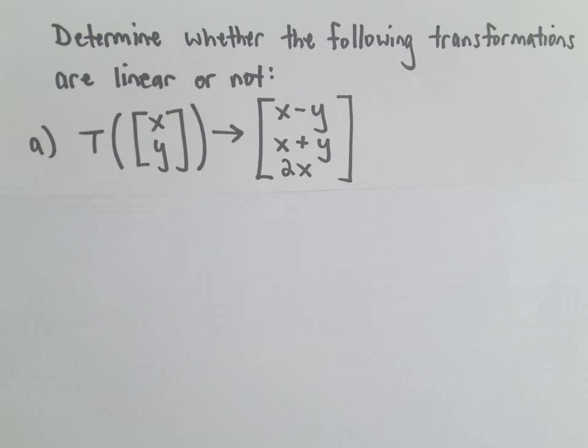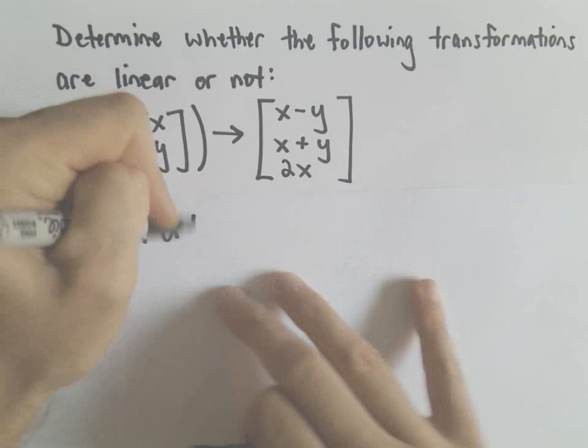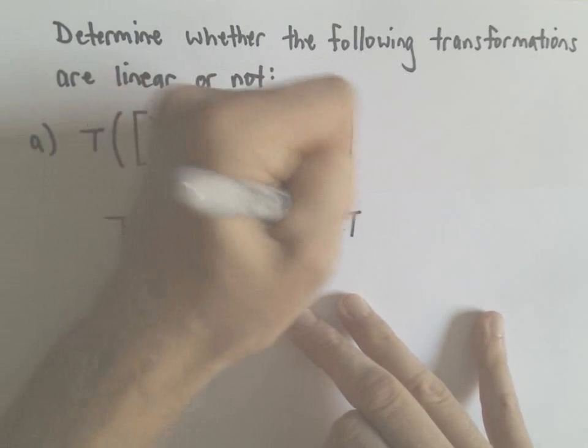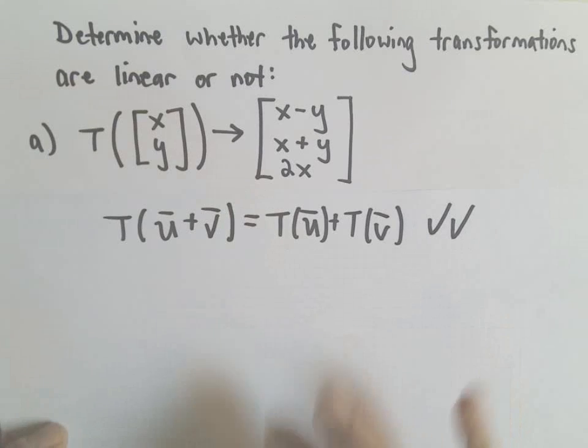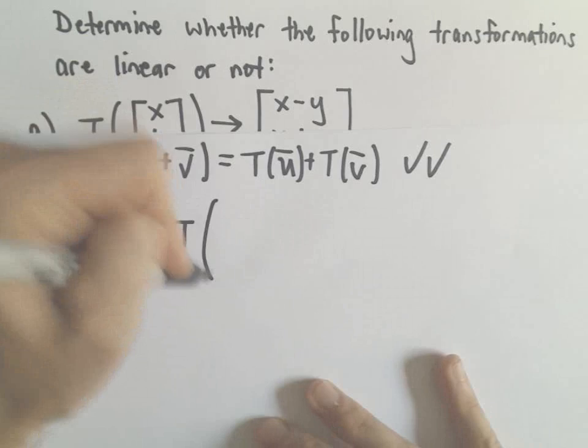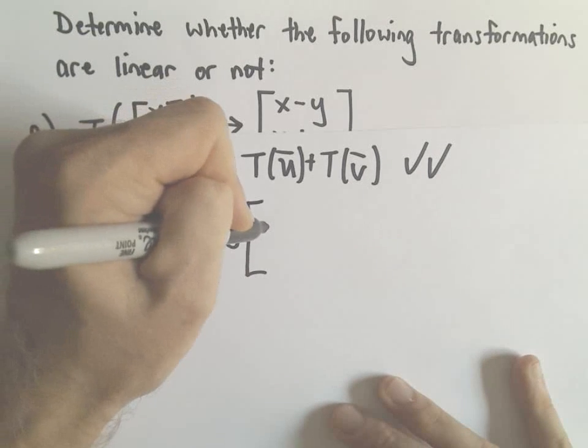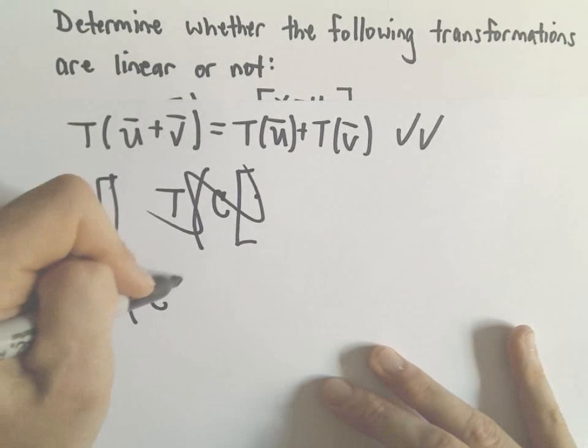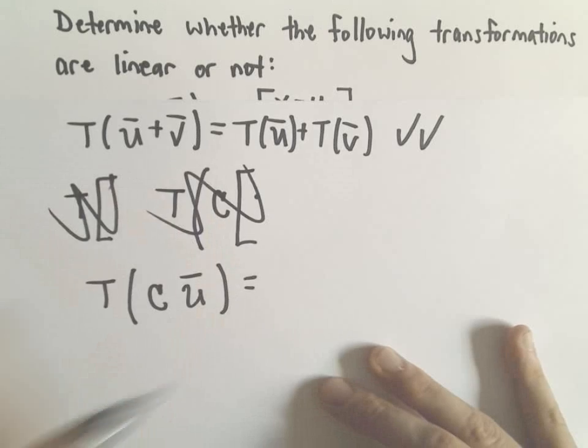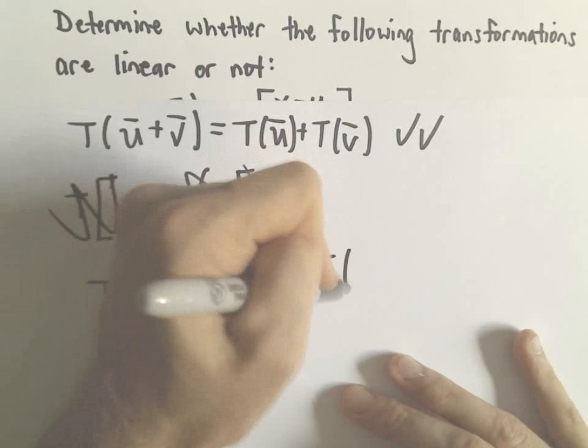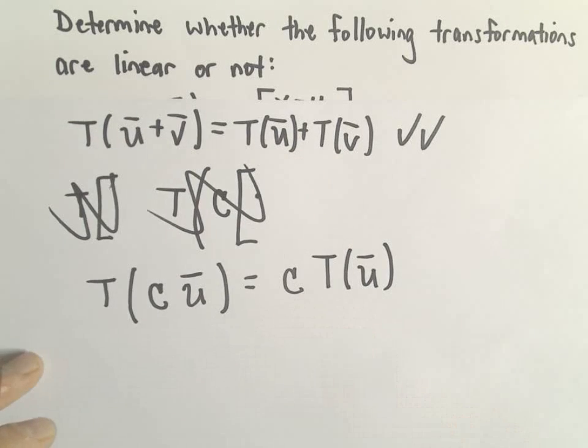So we showed the first condition was satisfied. Now the other condition says if we multiply our vector by a scalar, do we get the same thing as if we take the transformation first and then multiply by the scalar?